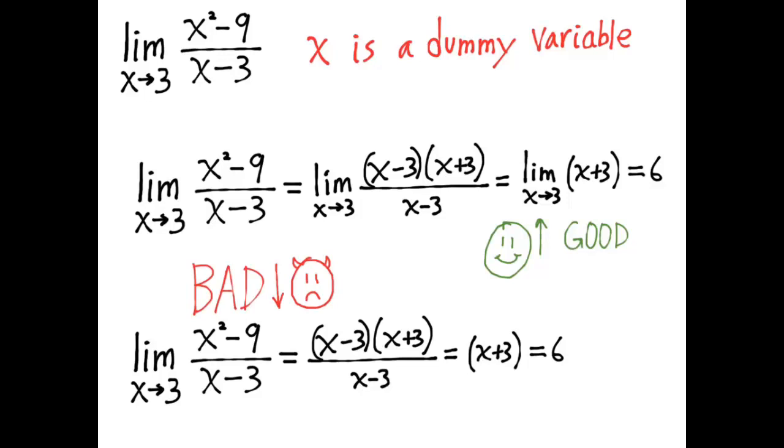In this statement, we have a limit in which x is a dummy variable is said to be equal to an expression that has x in it. And that's nonsense.